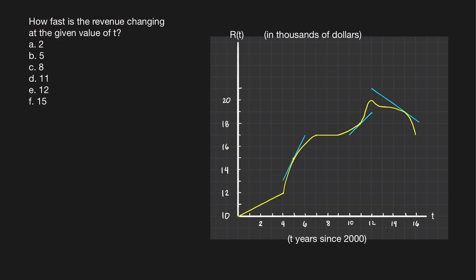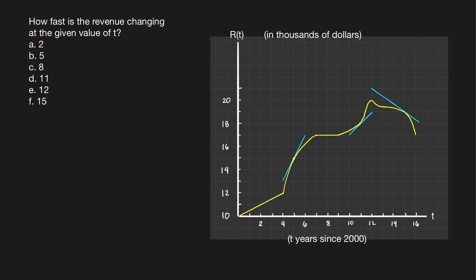This question is asking about the rate at which the revenue is changing. We're looking for rate of change — but is it average or instantaneous? We're not given a time interval, but a specific value of T: after 2 years, 5 years, 8 years, and so on. Therefore, we're looking for the derivative of the revenue function at a particular value of T.